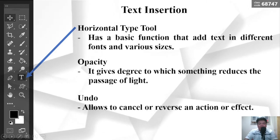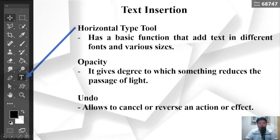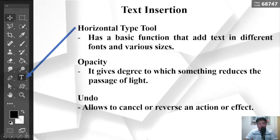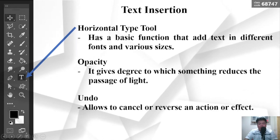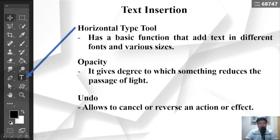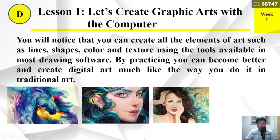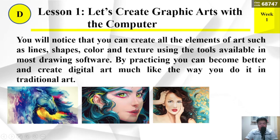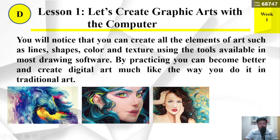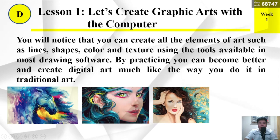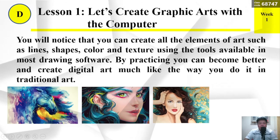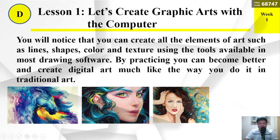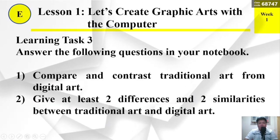Opacity — gives the degree to which something reduces the passage of light. Undo — allows you to cancel or reverse an action or effect. You will notice that you can create all the elements of art such as lines, shapes, color, and texture using the tools available in most drawing software. By practicing, you can become better and create digital art much like the way you do it in traditional art.